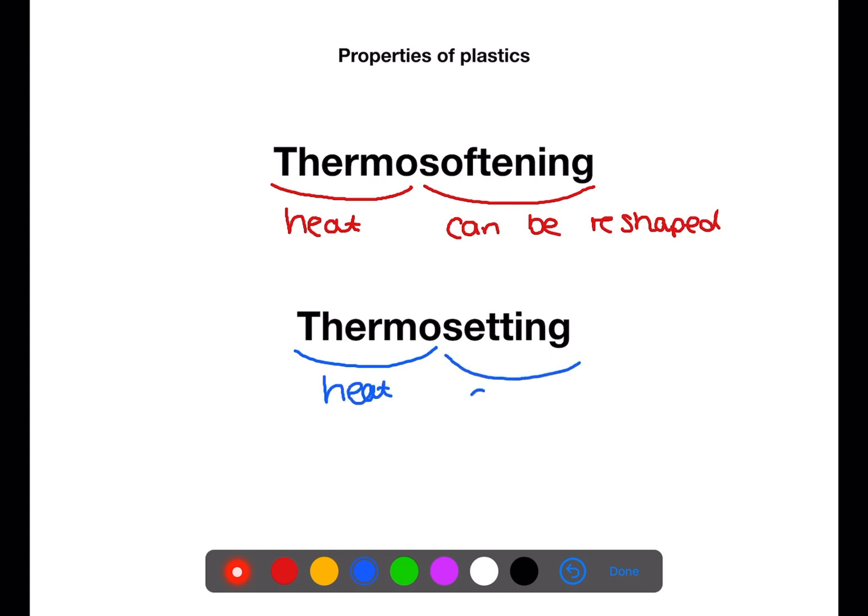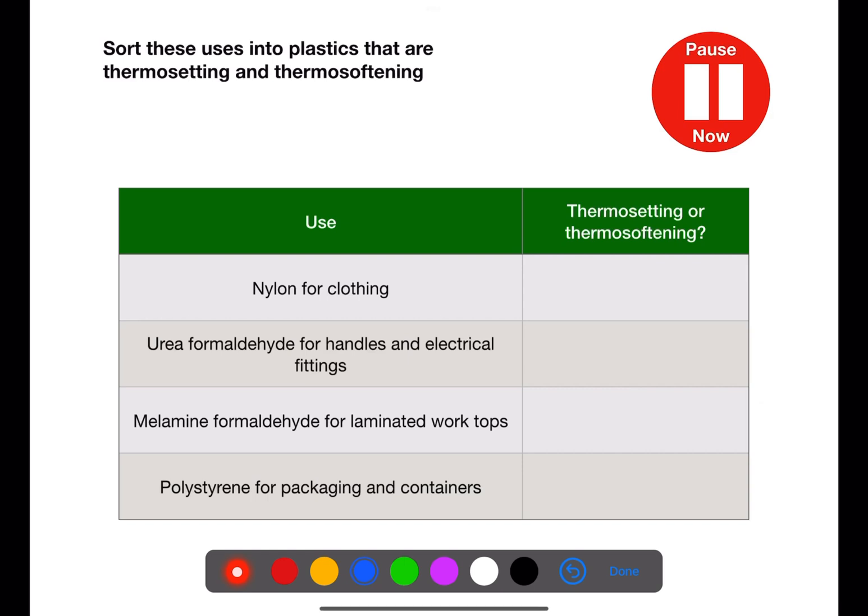Thermosetting plastics are those which cannot have their shape changed once you heat them up. This is useful for plastics where you need the shape to remain constant, such as things which need to be rigid like light switches.